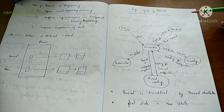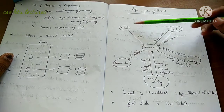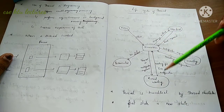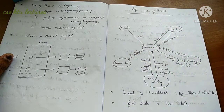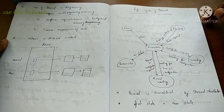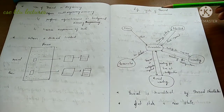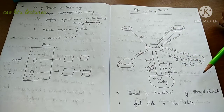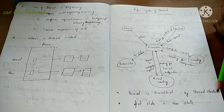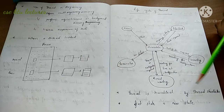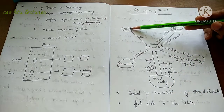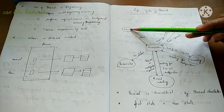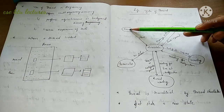The thread life cycle has six states: New, Runnable, Blocked, Waiting, Timed Waiting, and Terminated. The thread life cycle is handled by a thread scheduler. The initial state is the New state — the thread is created but has not yet started.